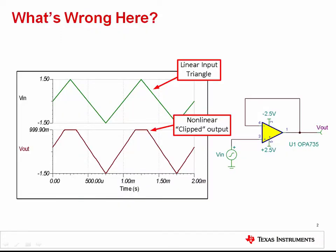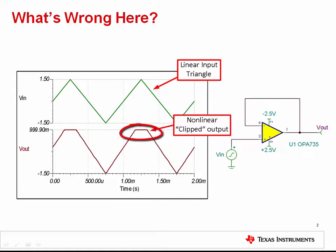Let's start by considering this simple non-inverting buffer circuit. A triangle wave input signal of plus or minus 1.5 volts is applied to the non-inverting input, and one might expect the output to look exactly the same. Though, the op amp output does not increase past 1 volt. This type of non-linearity is called clipping. We'll answer what is causing this clipping behavior at the end of the presentation, but first let's define some terms necessary to properly understand this issue.